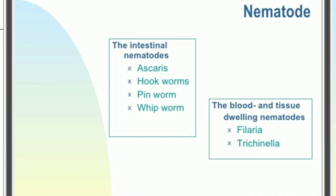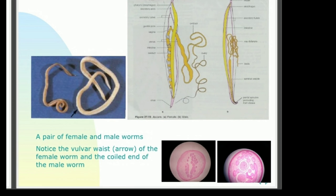In the next slide, male and female worm figures are observed. A pair of female and male worms are given on the left side, and the whole anatomy is given in the right side figure. In the microscopic structure, you can see the detail shown in the pink color circle.